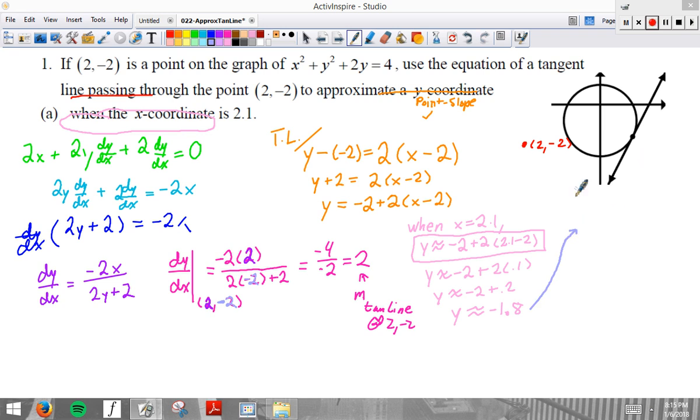So, what we're saying is that when X equals 2.1, the tan line Y value is negative 1.8, which approximates Y value of original equation.